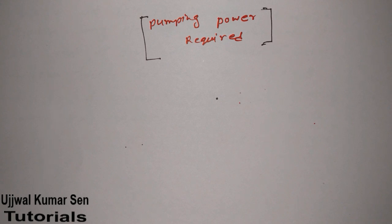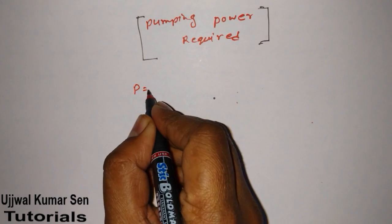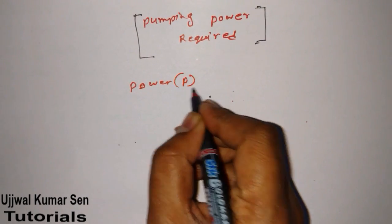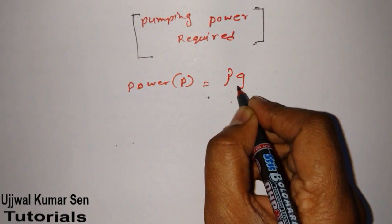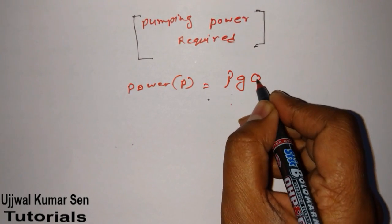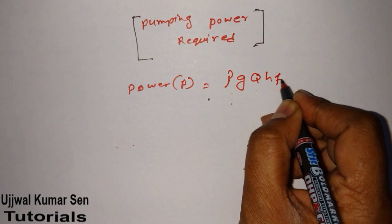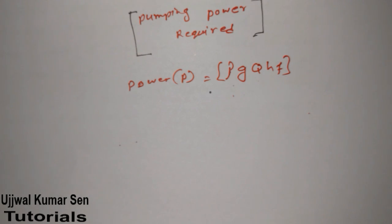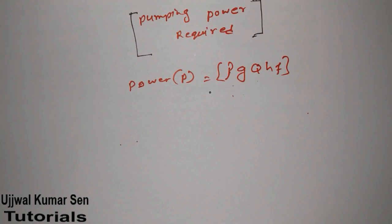The basic formula for pumping power required is: P = ρ × G × Q × H_F. Here, ρ is density, G is acceleration due to gravity, Q is discharge, and H_F is head loss.